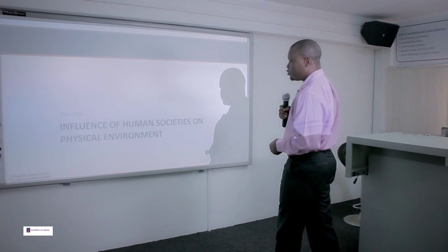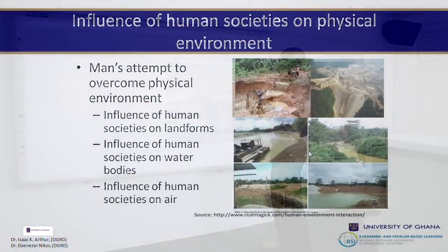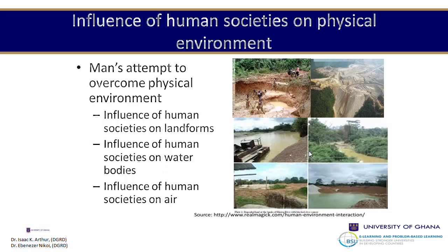Let's look at the influences of human societies on the physical environment. Looking at the pictures here, you can see some of these influences. They include influences on the landscape — people digging for gold or minerals, what has come to be known as galamsey in Ghana. Mining in general is part of the influence on the landscape. We also see instances where road networks are cut into mountainous surfaces — all examples of influence on landforms.